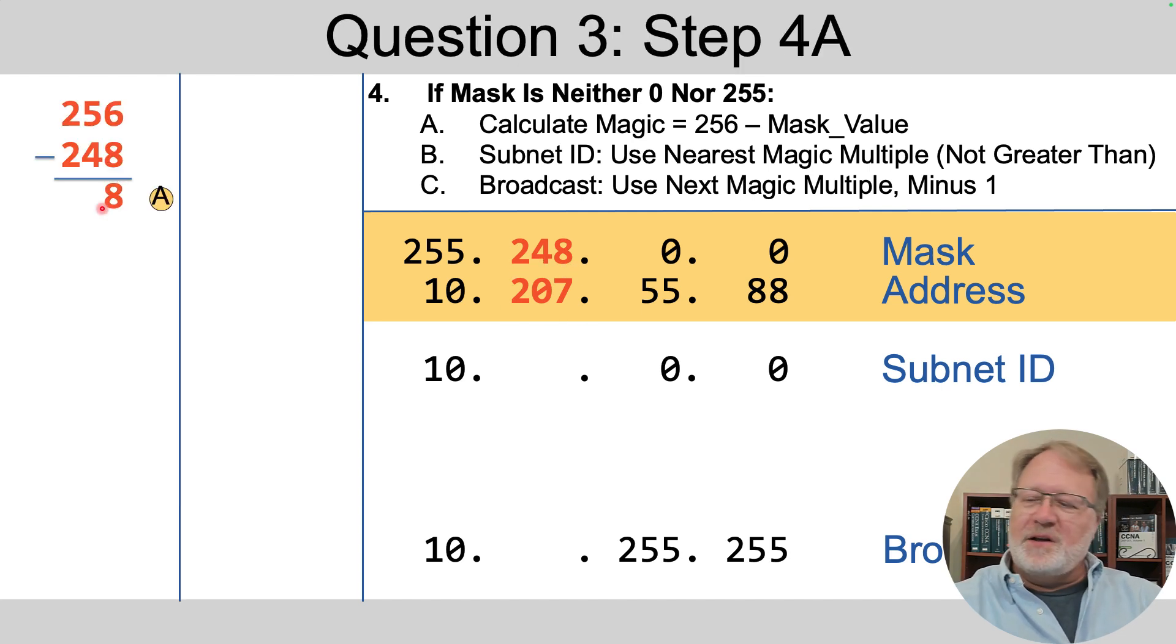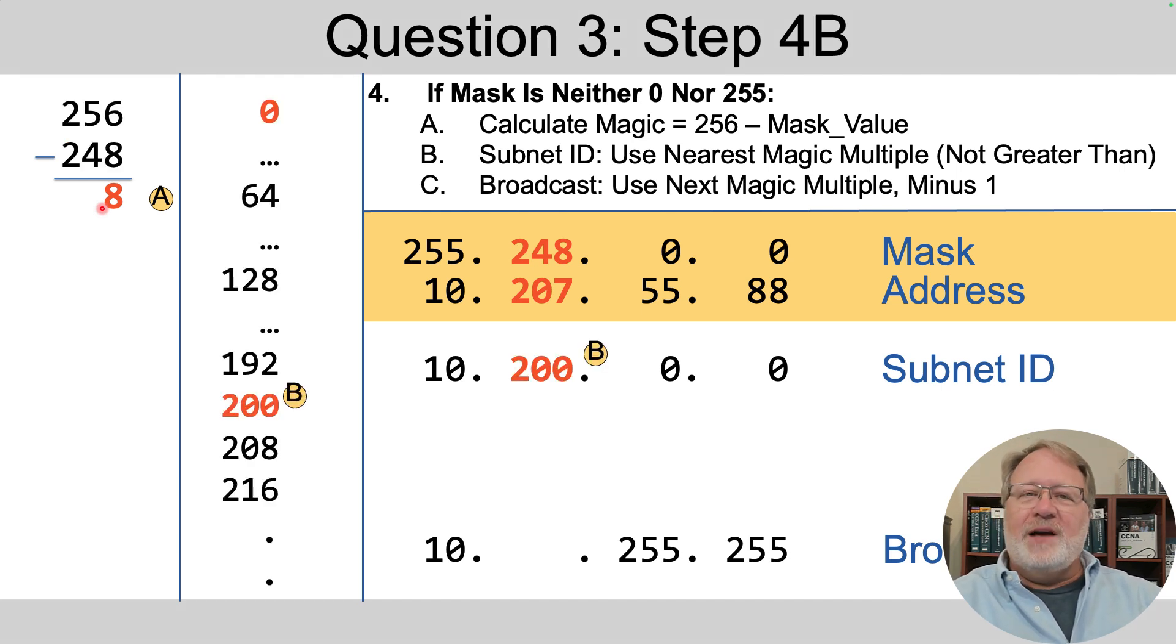So there's our calculation of the magic number. Same as the previous example, by the way. Then 0, 8, 16, 24. I didn't show those. I even just said, hey, I'm going to count by 64s for a moment. 0, 64, 128, 192.